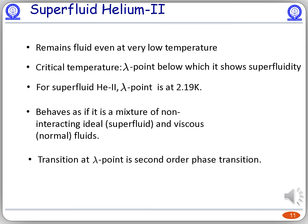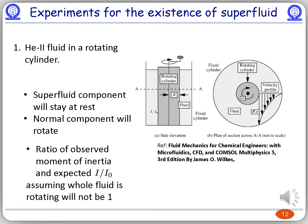At the lambda point, a second-order phase transition takes place. I will now discuss some experiments which show the existence of the superfluid component in helium-4 below its lambda point. When helium-4 fluid is taken in a rotating cylinder, the superfluid component will stay at rest since it is non-viscous, and the normal component will rotate along with the cylinder since its viscosity is finite. We can take the ratio of observed moment of inertia to the expected moment of inertia — the expected moment of inertia is calculated assuming the whole fluid is rotating. It turns out that the ratio is not 1, and this ratio can be used to determine what fraction of the fluid is superfluid versus normal component.